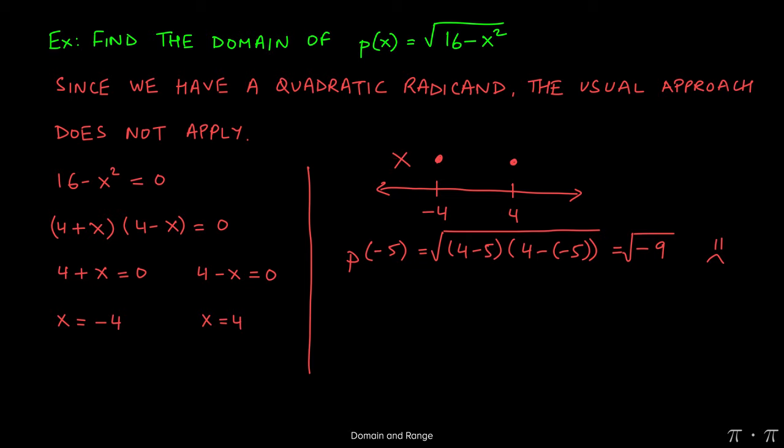If we pick a number in the middle of negative 4 and 4, say 0, 4 plus 0 is positive. 4 minus 0 is positive. If I multiply the two 4s, I get 16. I can find the square root of 16. I don't need to know what it is. I just need to know that it's a positive number so I can proceed. Happy face and this region is in the domain.